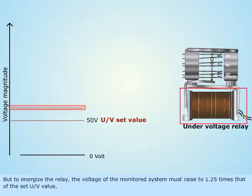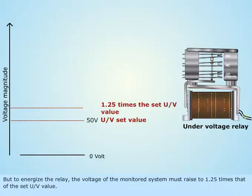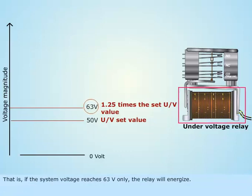But to energize the relay, the voltage of the monitored system must raise to 1.25 times that of the set under voltage value. That is, if the system voltage reaches 63 volts, the relay will energize.